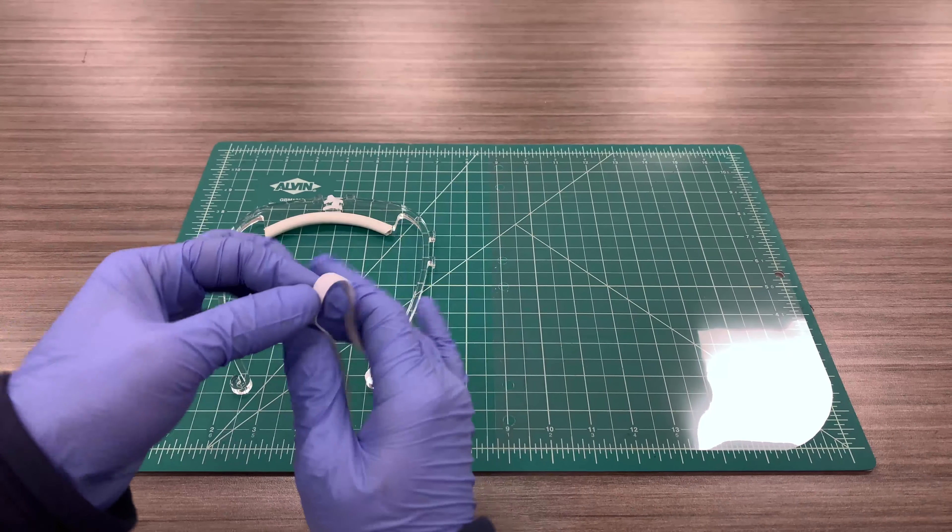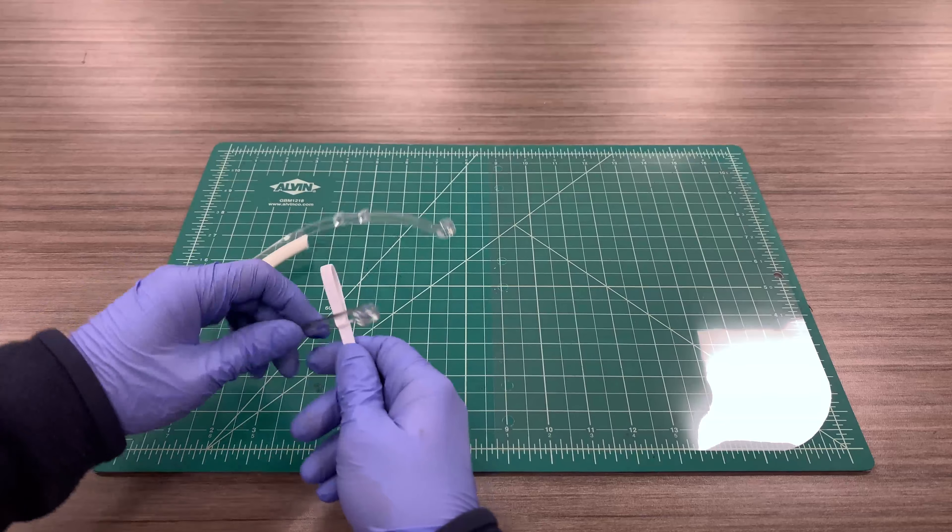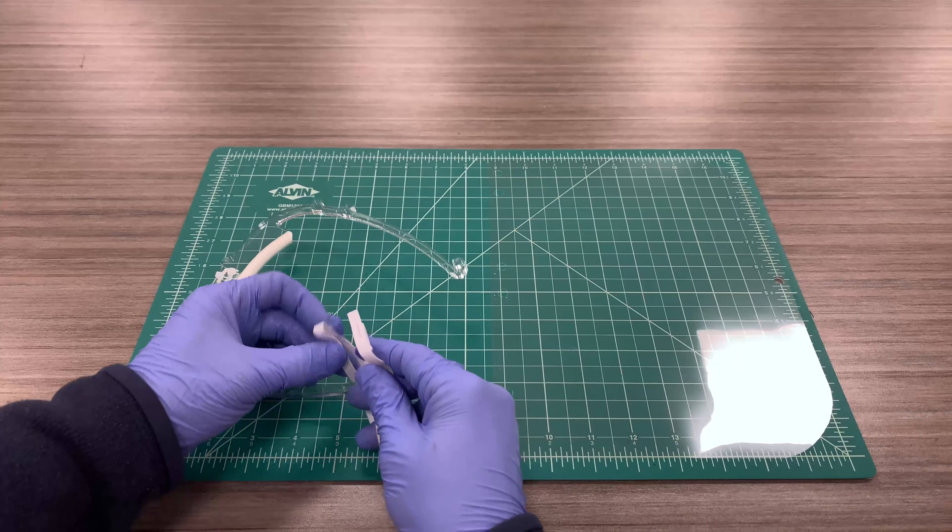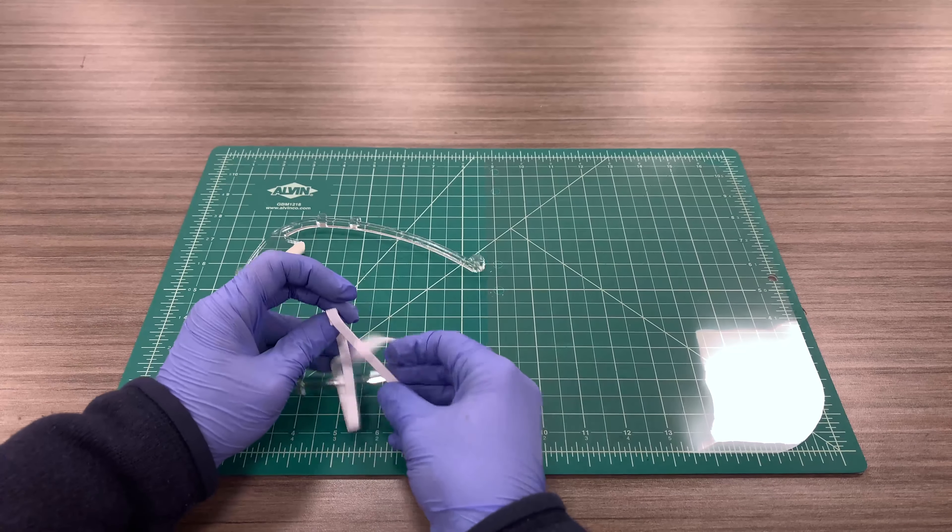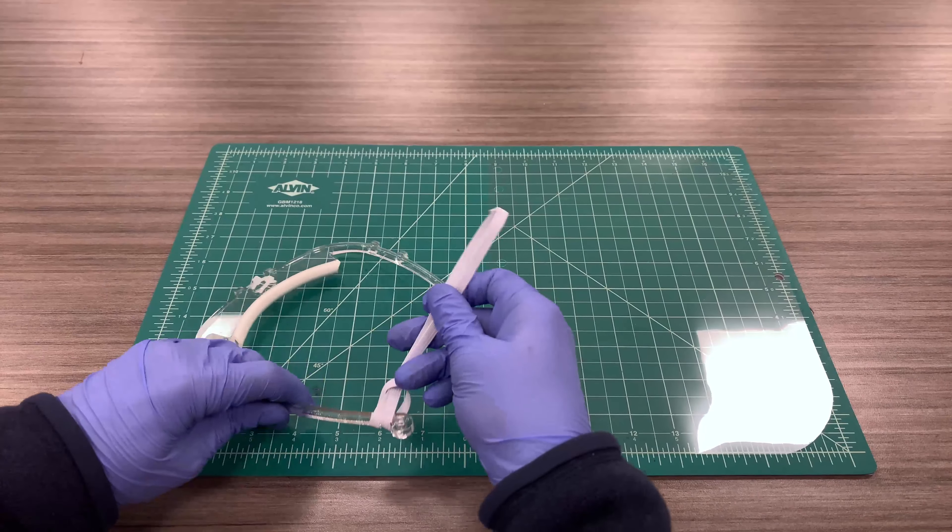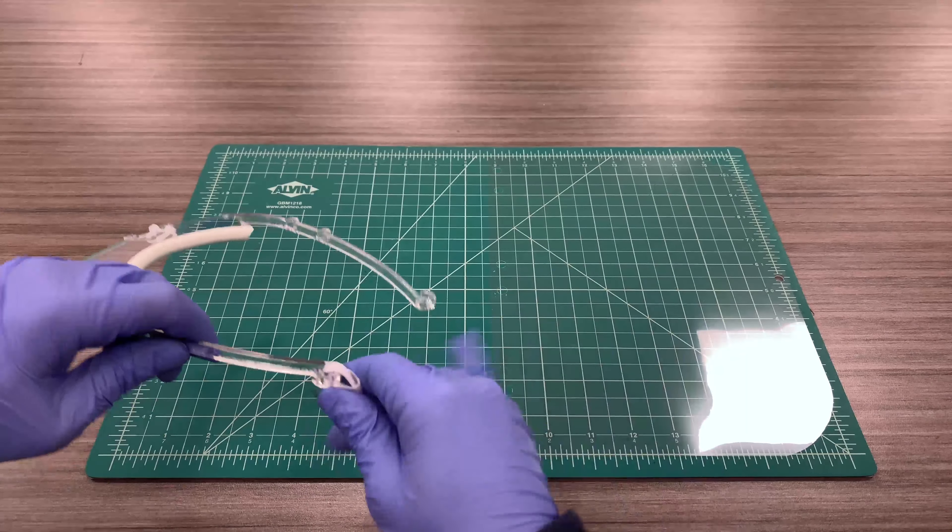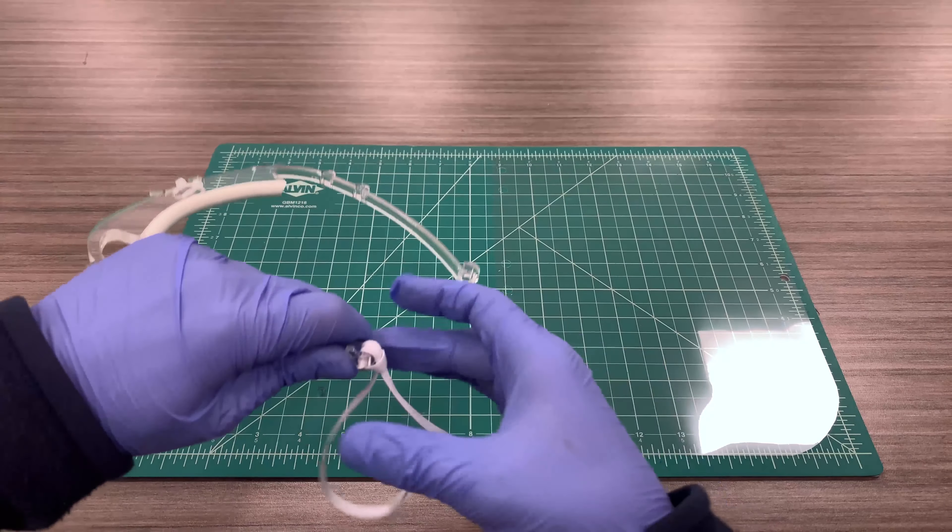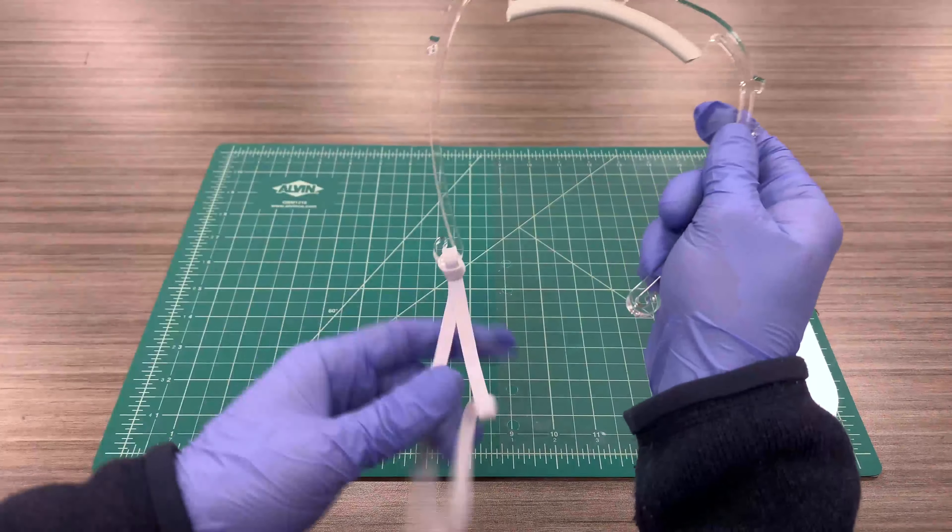All right, so now we want to attach the elastic loop. You're gonna take one end, push it through the other, and pull it all the way to the end and cinch it as tight as you can. Just like that.